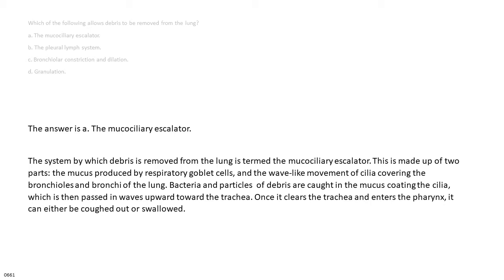Bacteria and particles of debris are caught in the mucus coating the cilia, which is then passed in waves upward toward the trachea. Once it clears the trachea and enters the pharynx, it can either be coughed out or swallowed.